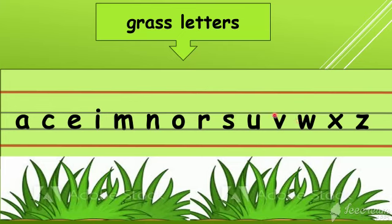Z — slant down and slant up. W — slant down, slant up, slant down, slant up. X — make a cross. Z — make a zigzag.